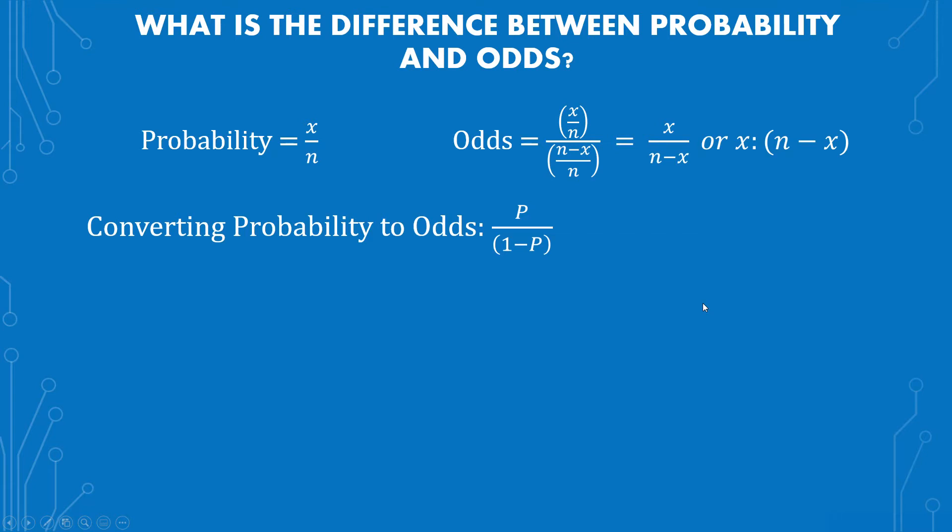The next thing is going over converting probability to odds, because there's a relationship there between odds and probability, given that odds within itself has the formula for probability. And converting from probability to odds, we have p over 1 minus p, or the probability over 1 minus the probability. In terms of the heads example with flipping the coin, the probability of heads equals 1 half or 0.5. The odds of heads through the conversion method equals 0.5 over 1 minus 0.5, which equals 0.5 over 0.5, which equals 1.